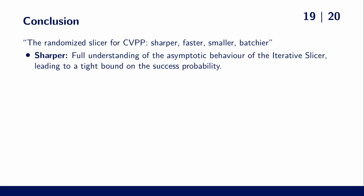Our analysis is sharper because we now have a full understanding of the asymptotic behavior of the iterative slicer, leading to a tight bound on the success probability. It's faster because we obtain better time memory trade-offs for CVP.